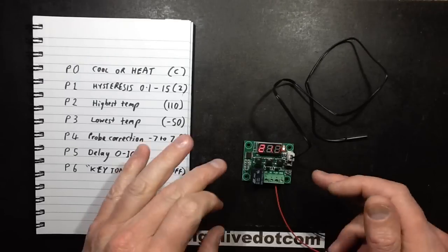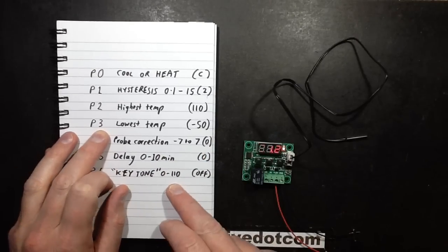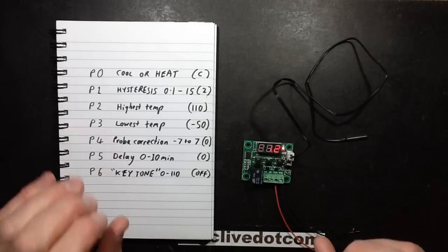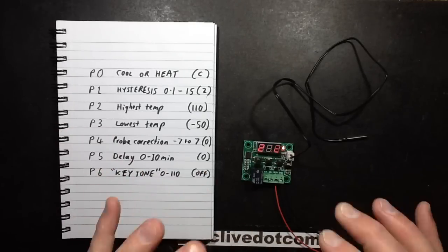Likewise, if you set the lowest temperature which is P3, then when it reaches that threshold, if it's getting too cold, it will start flashing the display as a warning again to get your attention.